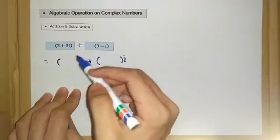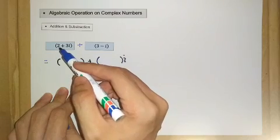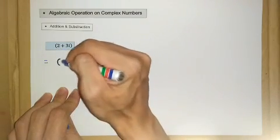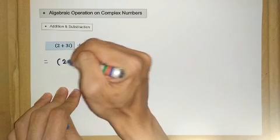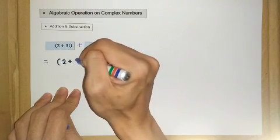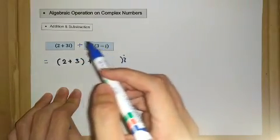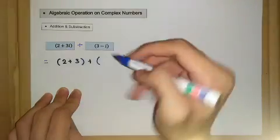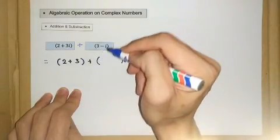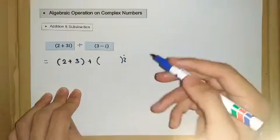So for the real part here we have 2 plus 3, and for the imaginary part we have 3 plus negative 1.